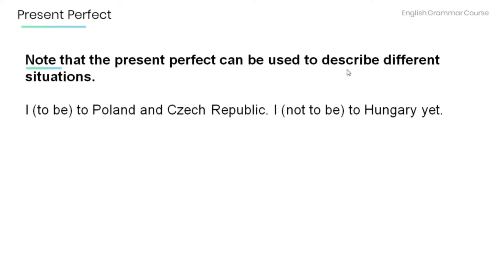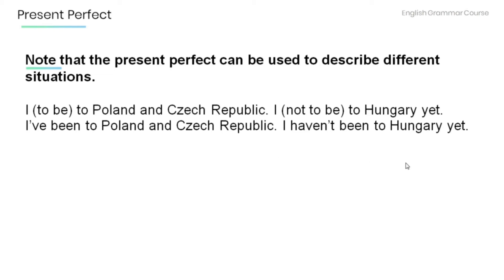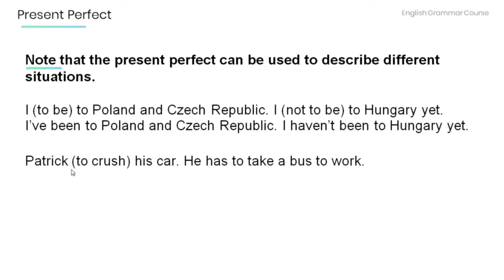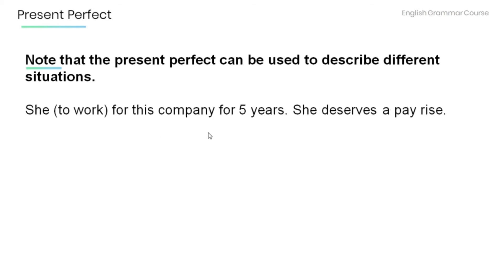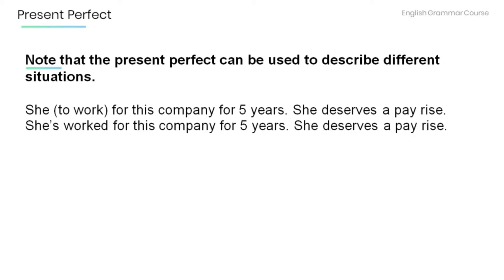Note that the present perfect can be used to describe different situations. Now read the following sentences and provide the present perfect form of the verbs in brackets. I've been to Poland and Czech Republic. I haven't been to Hungary yet. Patrick has crashed his car — he has to take a bus to work. She's worked for this company for five years — she deserves a pay raise.